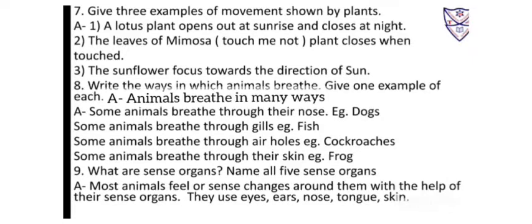Number 8. Write the ways in which animals breathe. Give one example of each. Answer: Some animals breathe through their nose — example: dogs. Some animals breathe through gills — example: fish. Some animals breathe through air holes — example: cockroaches. Some animals breathe through their skin — example: frog.